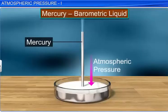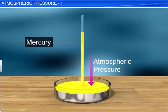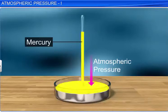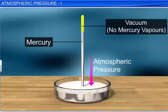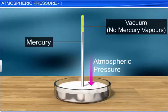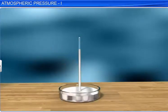Mercury is used as a barometric liquid because its density is the highest among liquids. It is readily available in pure and dry form. At normal temperatures, its vapor pressure is negligible, so there are no mercury vapors above the mercury column. It is easy to note mercury readings because it is a shiny and opaque metal and it does not stick to the sides of the glass tube.